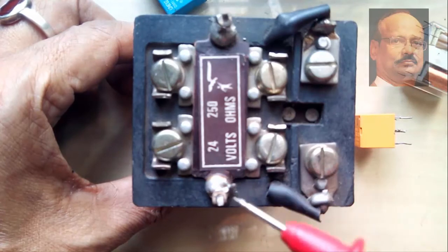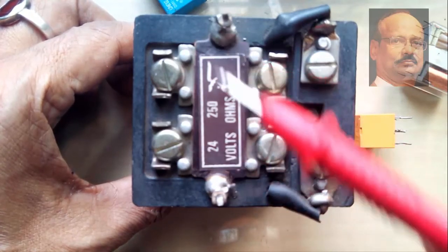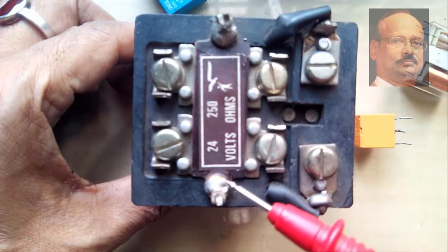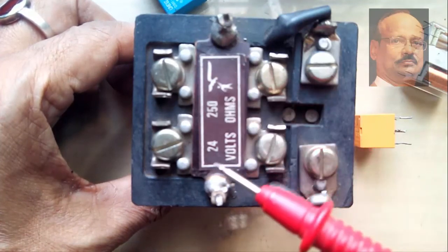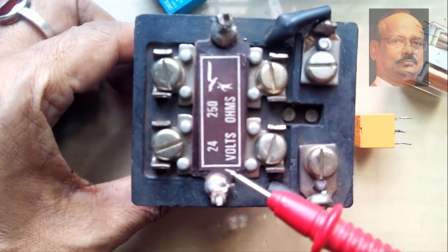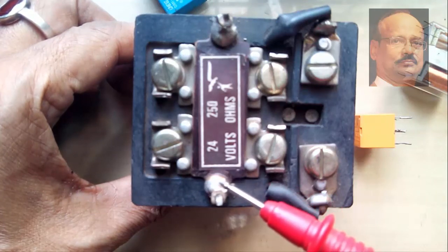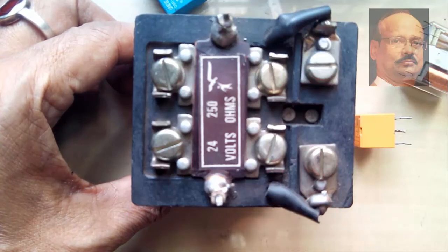And the coil is here. So to understand which one is the coil, the ohms is also written. It is a 250 ohms coil, so that you can design your circuit accordingly for handling or driving it through any transistor or any other logical device.